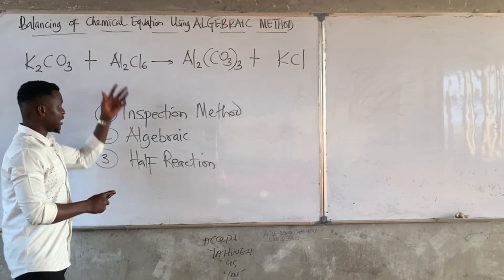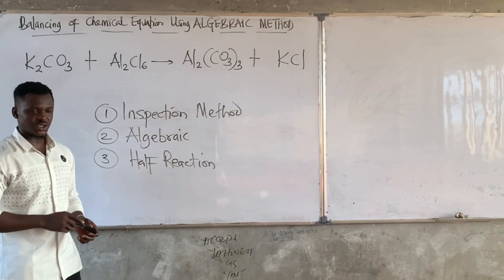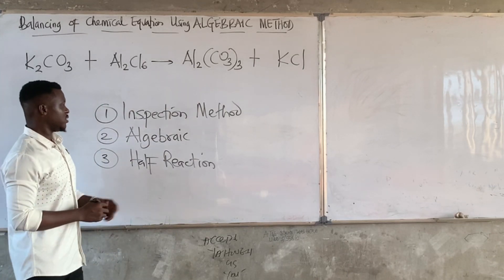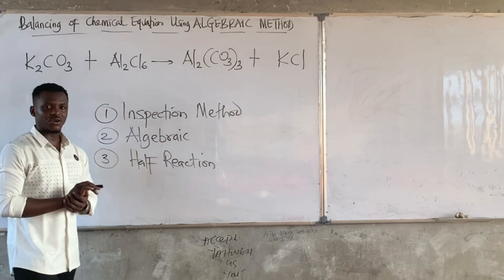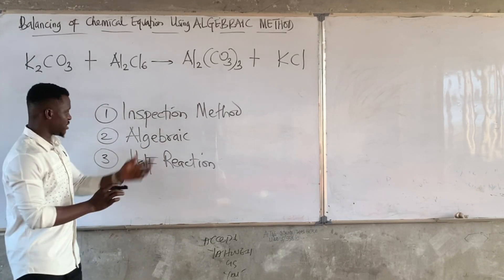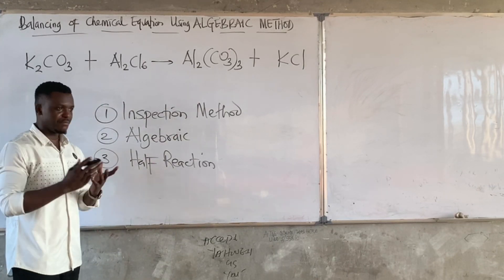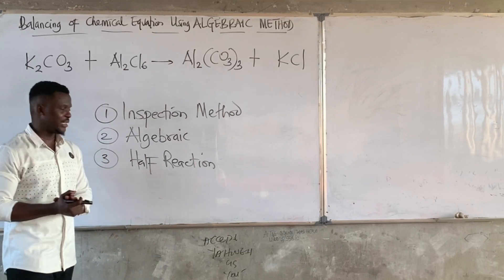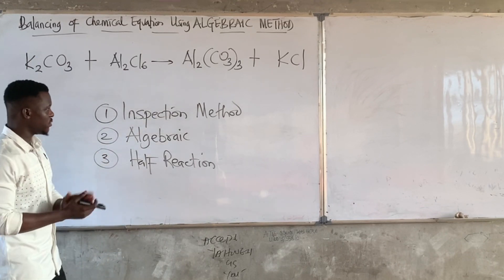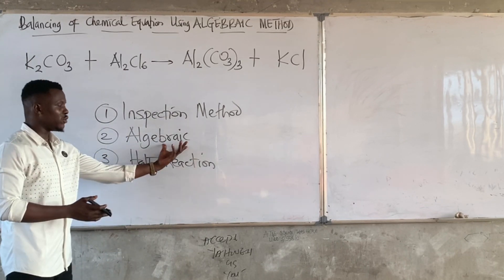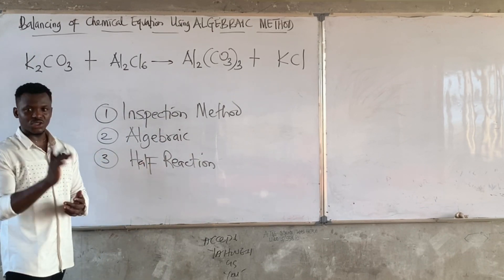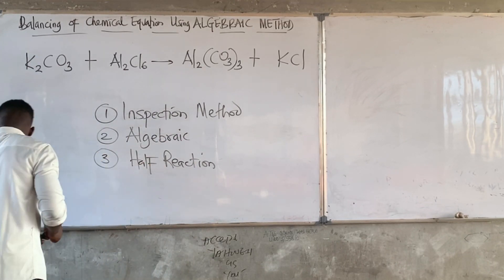If you look at this reaction, this is not a redox reaction, so we are going to use the algebraic method. The inspection method is the most common way of balancing chemical equations, but let's look at the most systematic way, which is the algebraic method.